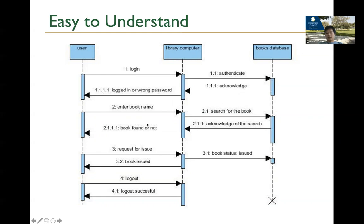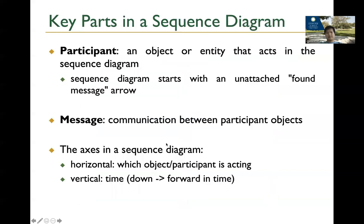Sequence diagrams are really used a lot for tasks involving user flows and complicated sequential algorithms. But if your thing is really simple or only happens within one object, you don't really need a sequence diagram. Some key concepts: a participant is basically the object or entity that acts in the sequence diagram. There is also a message, which is the communication going on, represented with arrows.